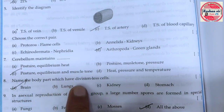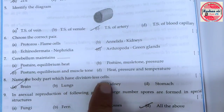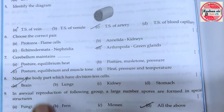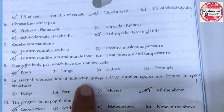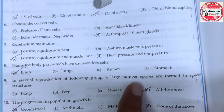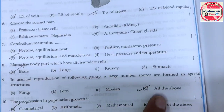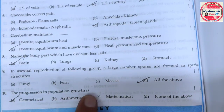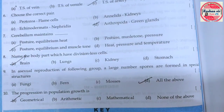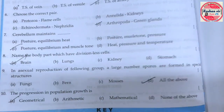Name the body part which has non-dividing cells — brain. In asexual reproduction, a large number of offspring form from special structures — all of the above. The progression of population growth — geometrical.